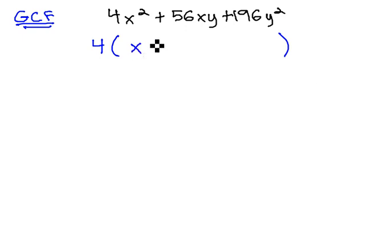Factoring out the 4, we're left with x squared plus 14xy plus 49y squared.